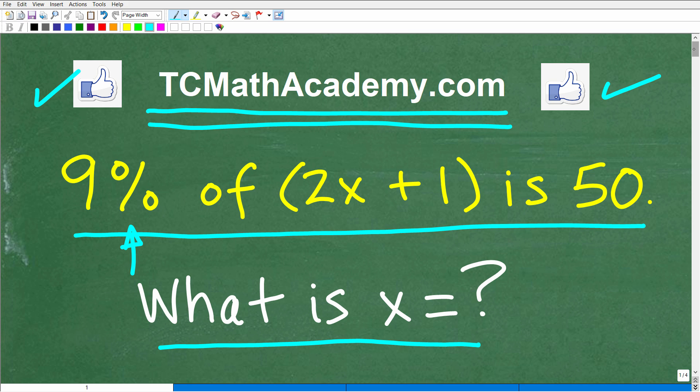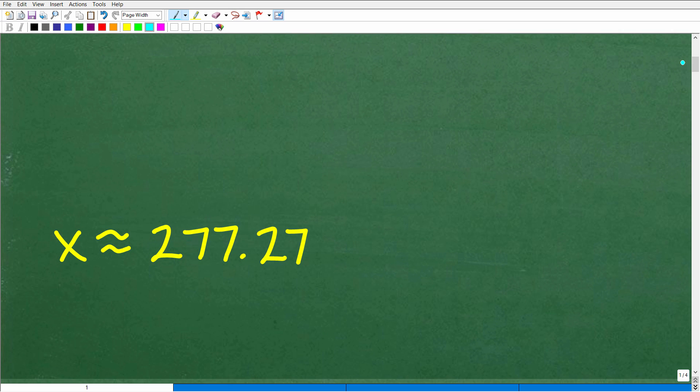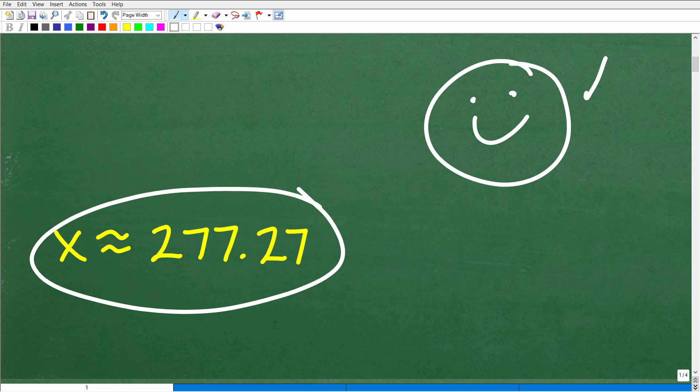Okay, so let's go ahead and take a look at the answer. So 9% of 2x plus 1 is 50. What is x equal to? Well, the answer is the following. x is approximately equal to 277.27. Okay, so if you've got a decimal that's pretty close to this, well, that indicates that you know what you're doing. And let's go ahead and celebrate by giving you a nice little happy face and A plus 100% and multiple stars. So you can tell your friends and family that indeed you know a lot about percent and algebra.